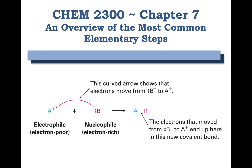Welcome to chapter 7. In chapter 7 we're going to do a quick overview of the most common elementary steps in reaction mechanisms. You can see an example here where we're showing a reaction with a nucleophile and an electrophile. We're going to go through lots of examples of how nucleophiles and electrophiles work.